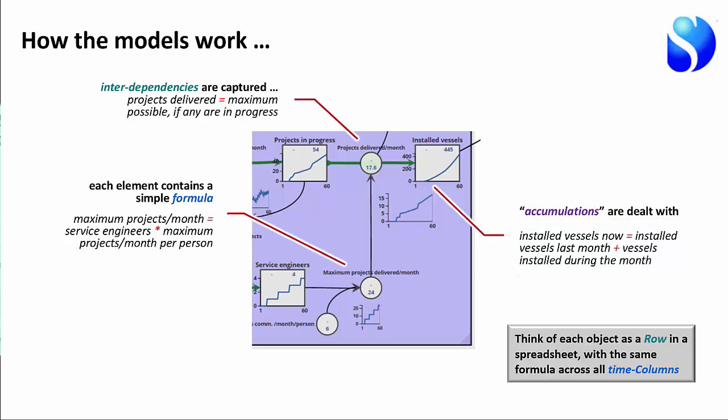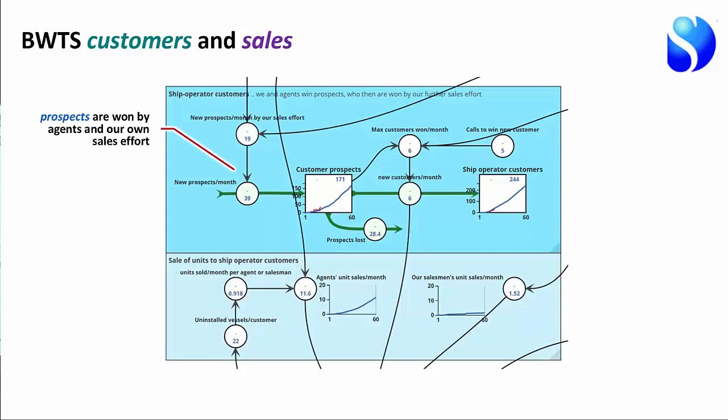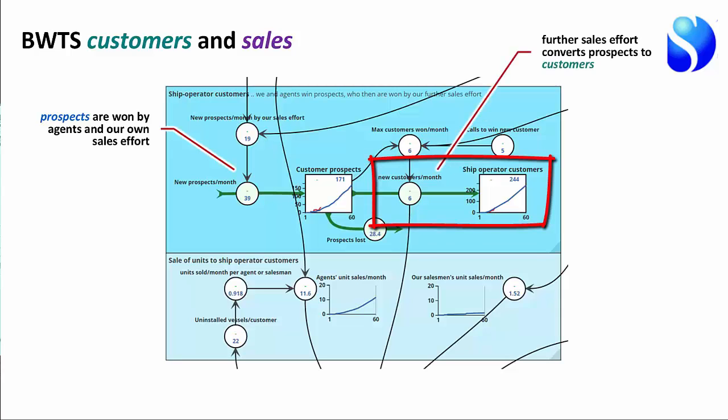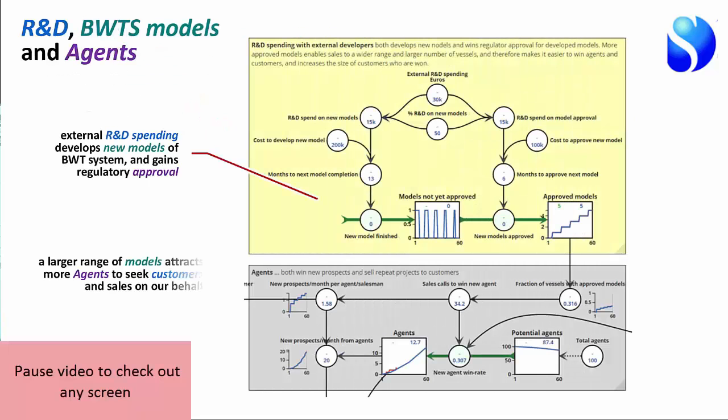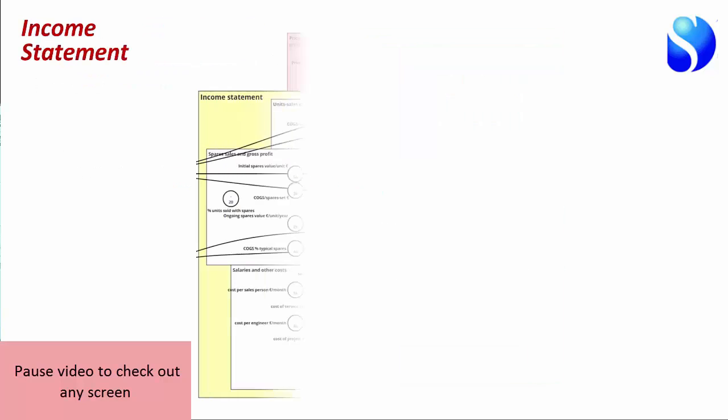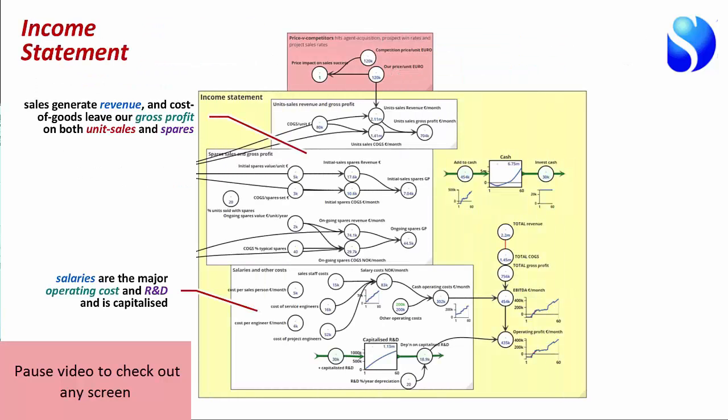The same thing works all the way through. This is prospects being won by our salespeople and by our agents. We've got agents winning prospects and our salespeople winning prospects. Our salespeople convert those prospects into actual customers, and that generates some sales. This is vessels. This is customers giving us access to uninstalled vessels, new projects, projects being started, projects delivered. You have all the slides. I won't go through all of these in detail in the interest of time. Let me just scroll through these quickly and we can come back to this.